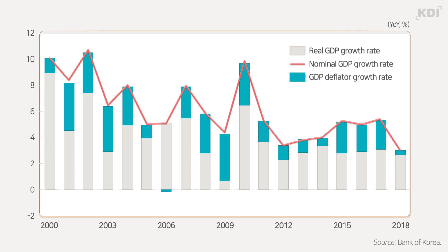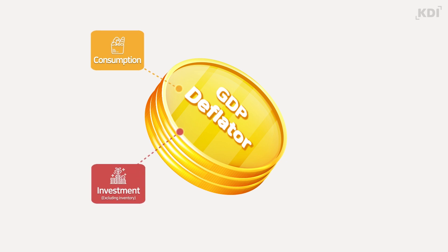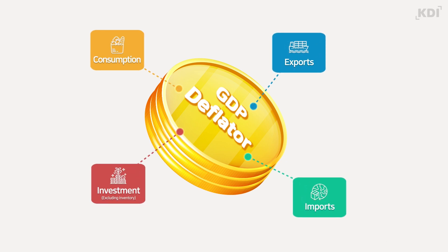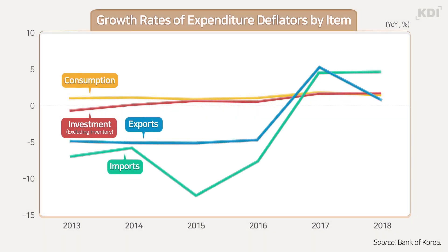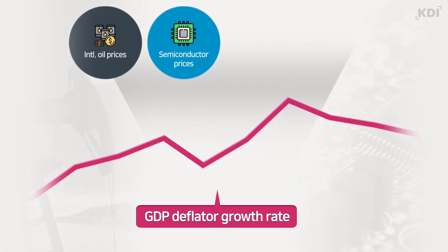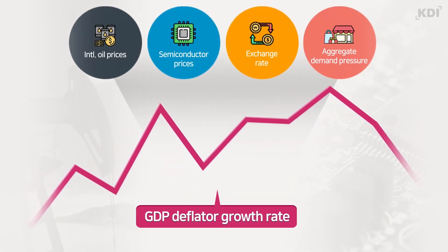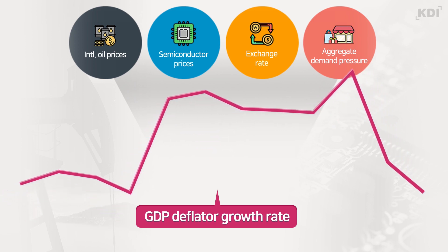The result of KDI's analysis on the GDP deflator using consumption, investment, export and import reveals that while consumer and investment prices have been relatively stable, there was considerable volatility in exports and import prices. Specifically, international oil and semiconductor prices, exchange rates, and aggregate demand pressure are some of the factors that influence the GDP deflator growth rate.